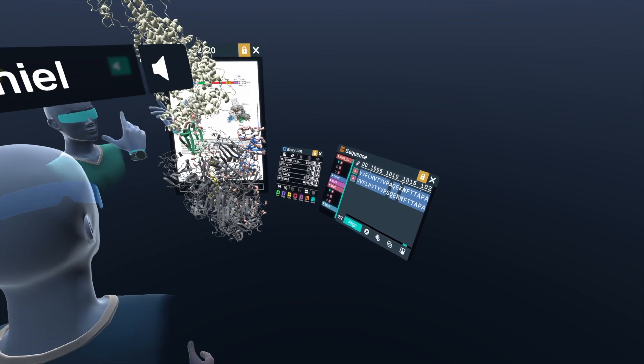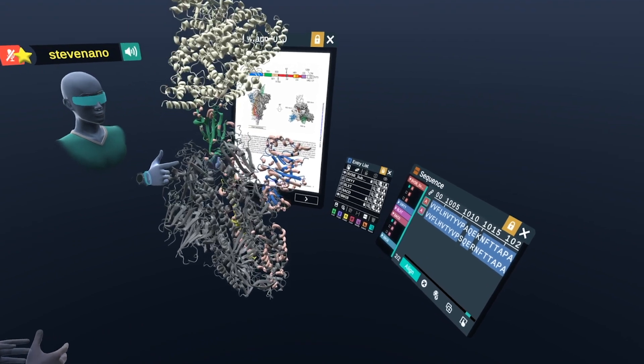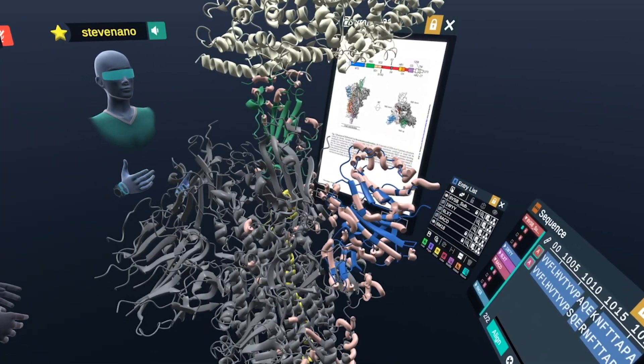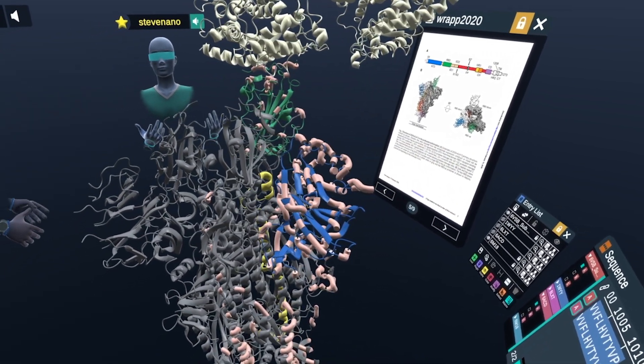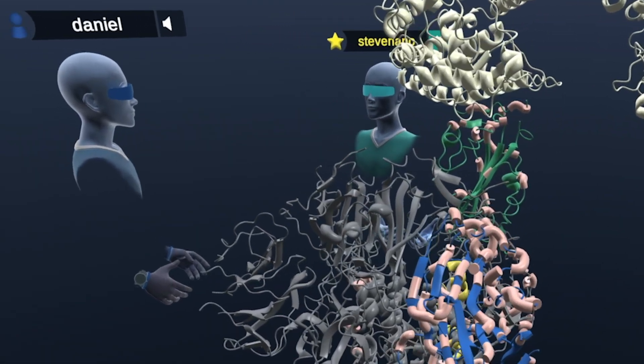So if you could look at this interface here and design something that could block it, that could target it, that could render this spike unable to do its job, then you might be able to prevent people from getting the disease or cure people that have the disease. And so that's the main interest in looking at the spike protein.